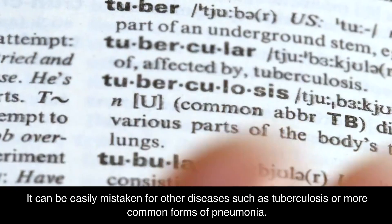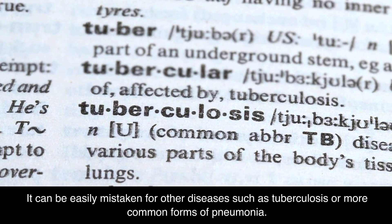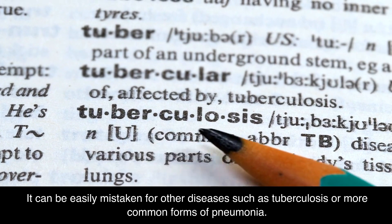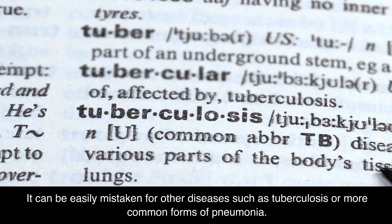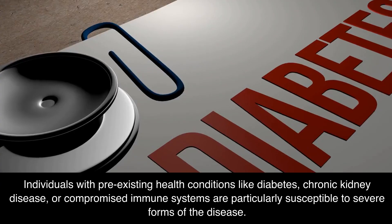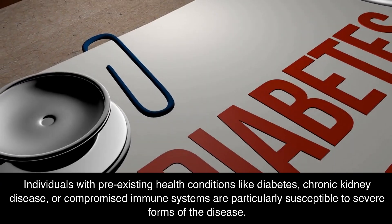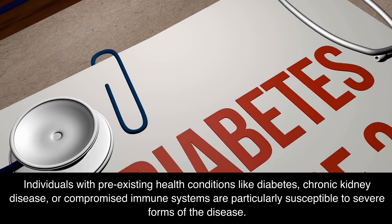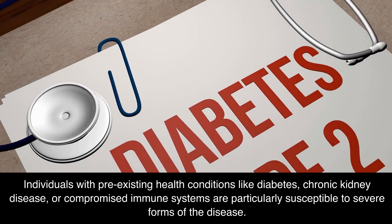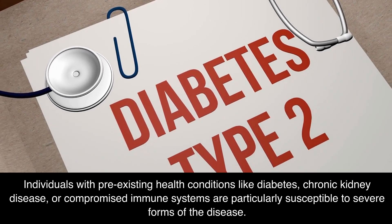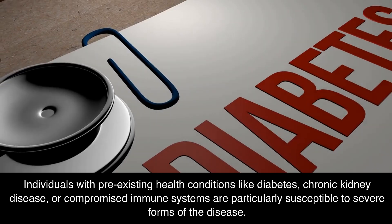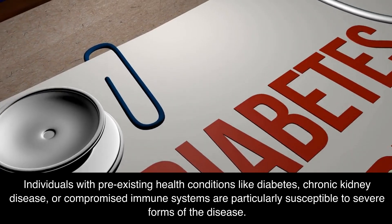Melioidosis can be easily mistaken for other diseases such as tuberculosis or more common forms of pneumonia. Individuals with pre-existing health conditions like diabetes, chronic kidney disease, or compromised immune systems are particularly susceptible to severe forms of the disease.